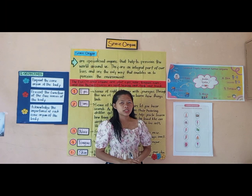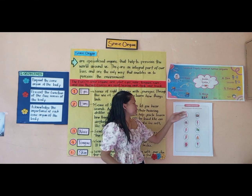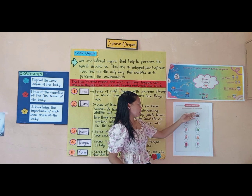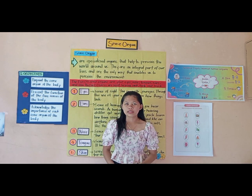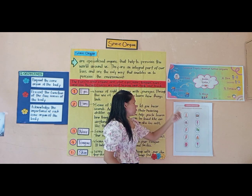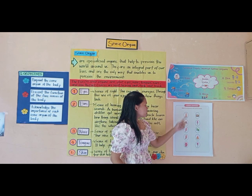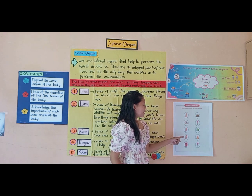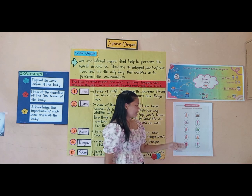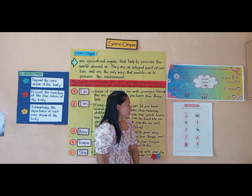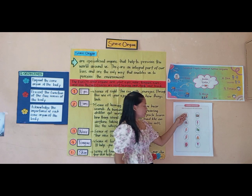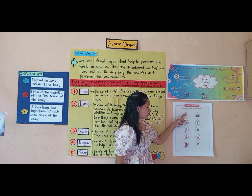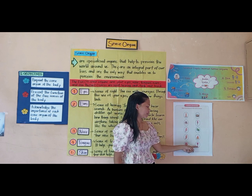So, for our activity today, you are going to match the pictures to the correct senses. The sense organs we will use are: nose, eyes, hands, ears, and mouth. For nose, the picture is a flower.